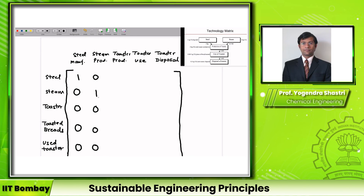For steam production: it produces steam and nothing else, so the entry is 1 and everything else is zero. A possible point of confusion: why 1 and not 0.5? Because the technology matrix captures the performance of the technology. Emission data is given per megajoule of steam — 4 kg of CO₂ per megajoule — so the information is given for 1 megajoule, and therefore we use 1 here.